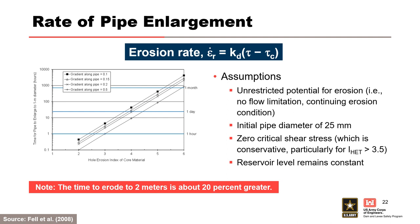Based on hole erosion test results, this figure shows the approximate time for a pipe to enlarge from 25 millimeters to one meter in diameter as a function of erosion resistance and hydraulic gradient. Erosion resistance increases from left to right. The approximate time to erode to two meters is about 20% greater. Even in the most resistant of soils, enlargement occurs in only 100 to 500 hours, or four days to three weeks.